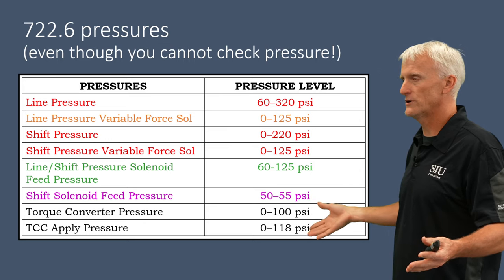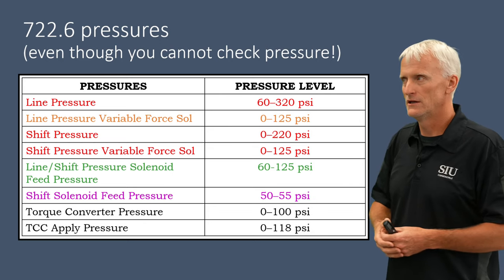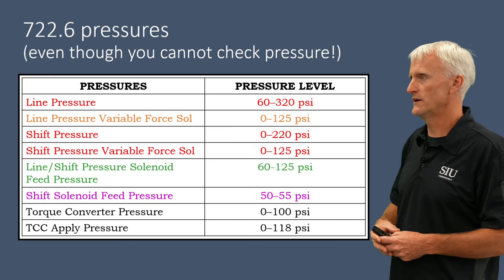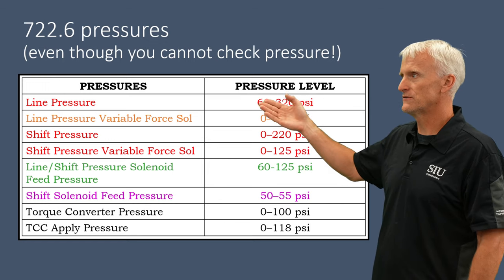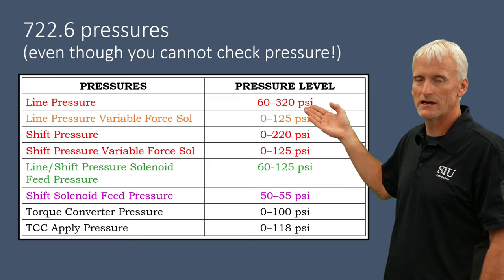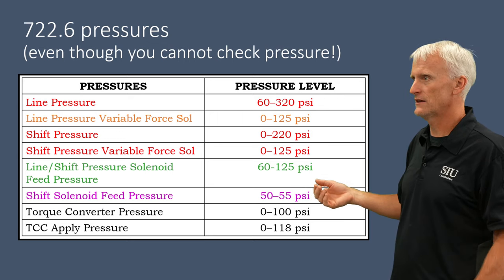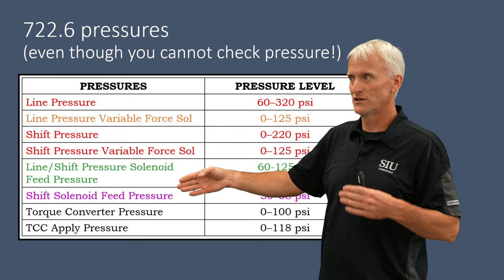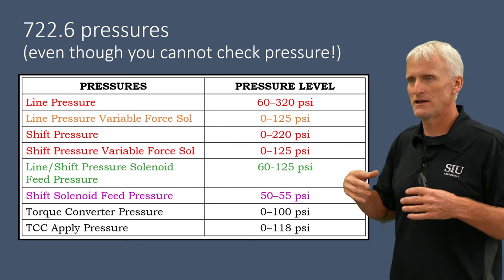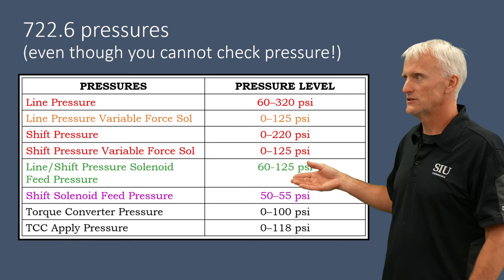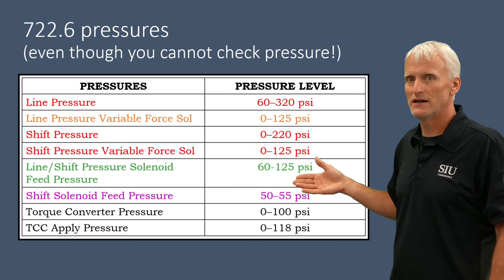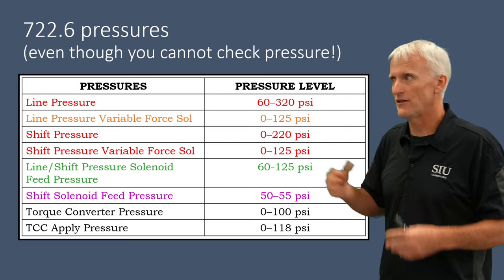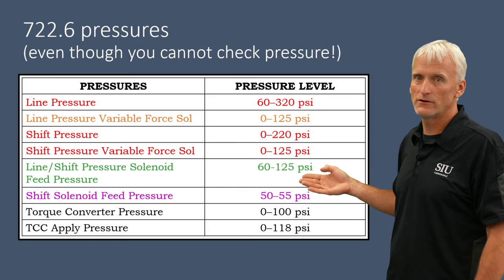On this table we have the pressures this transmission operates under. Unfortunately you cannot check the pressures on this transmission except for maybe the torque converter pressure through the cooler lines. Line pressure operates between 60 and 320 psi but there's no line pressure tap to verify it. There's also a valve for the line/shift pressure solenoid feed pressure — basically a solenoid pressure regulator valve — that drops pressures between 60 and 125 psi. So the line pressure and shift pressure solenoids won't see anything above 125 psi.